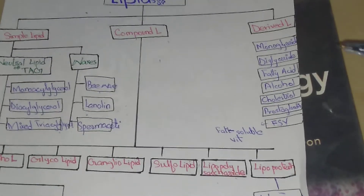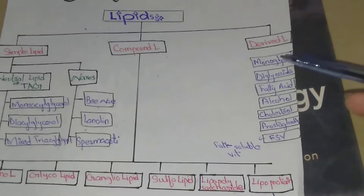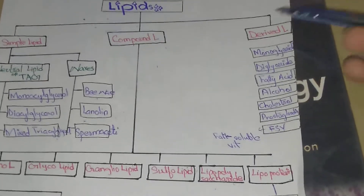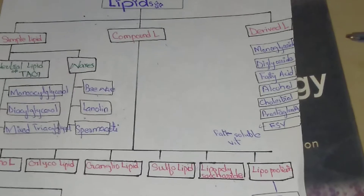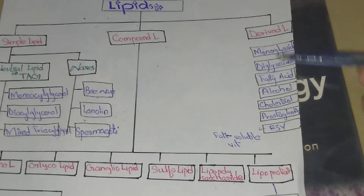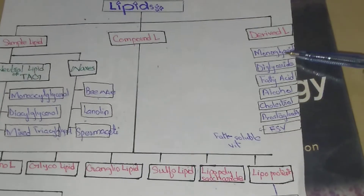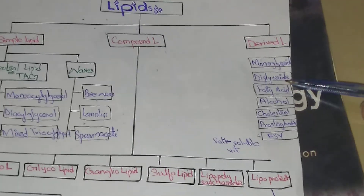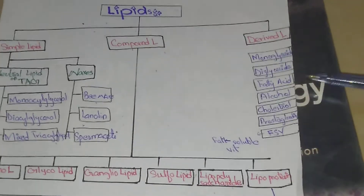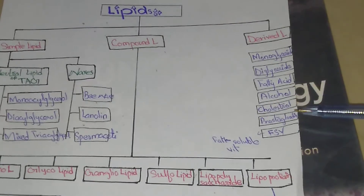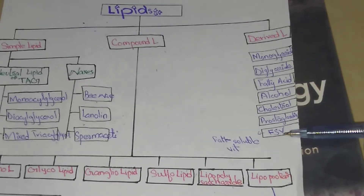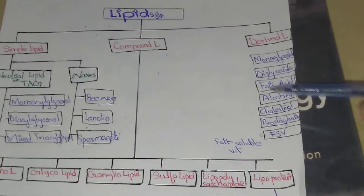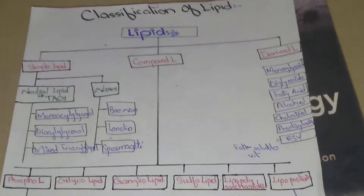Derived lipids are produced due to hydrolytic products of compound lipids. Derived lipids are further divided into the following types: monoglycerides, diglycerides, fatty acids, alcohols, cholesterol, prostaglandins, and fat-soluble vitamins.